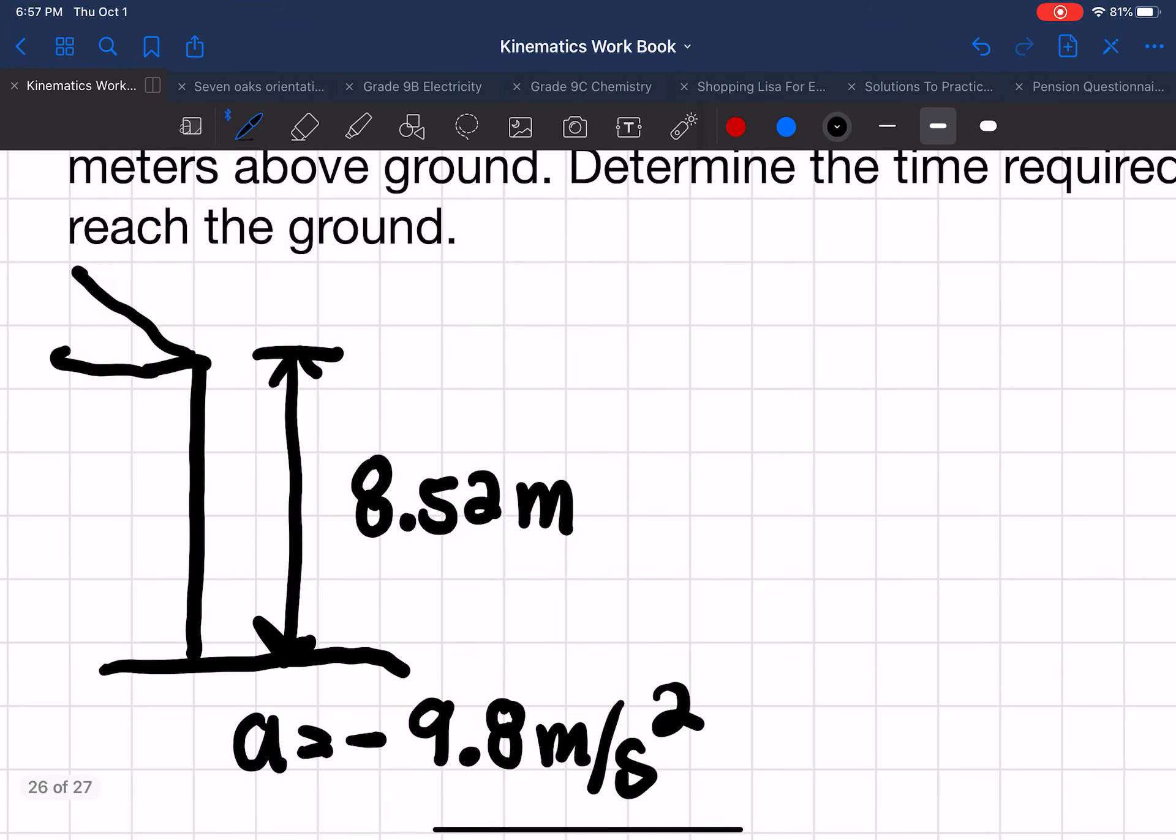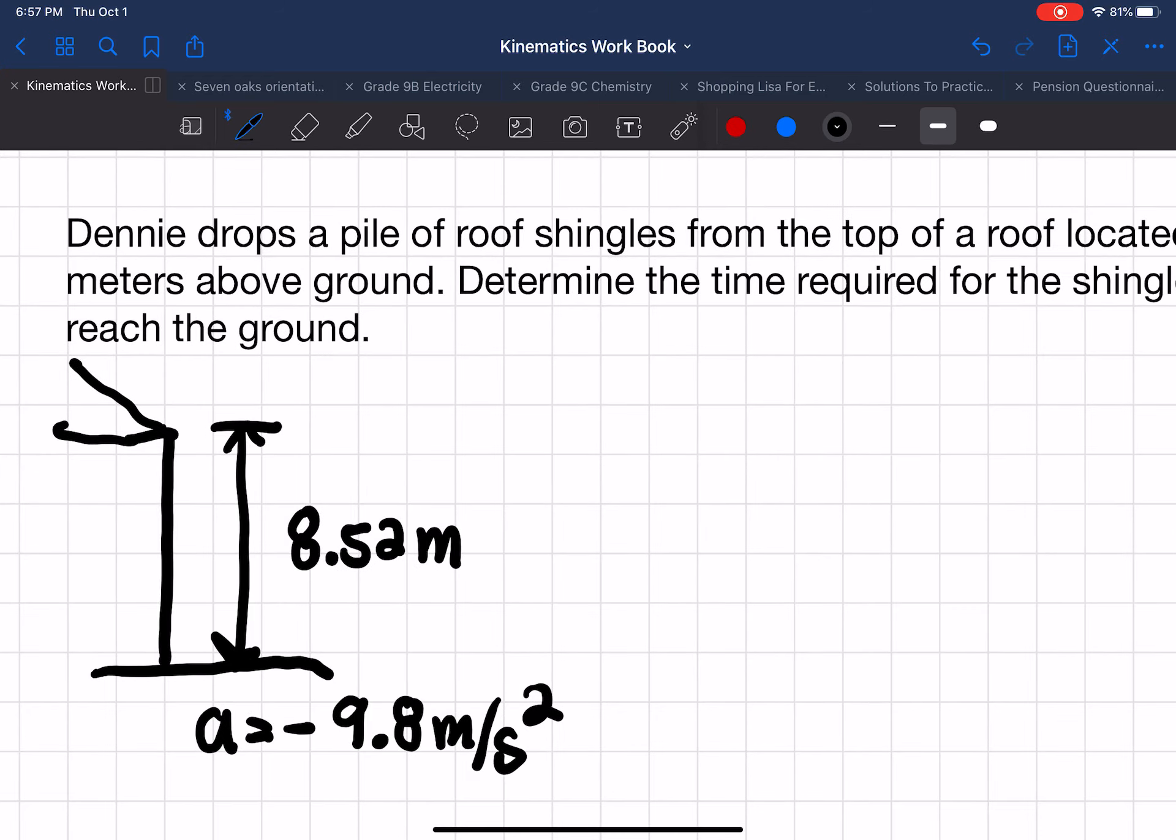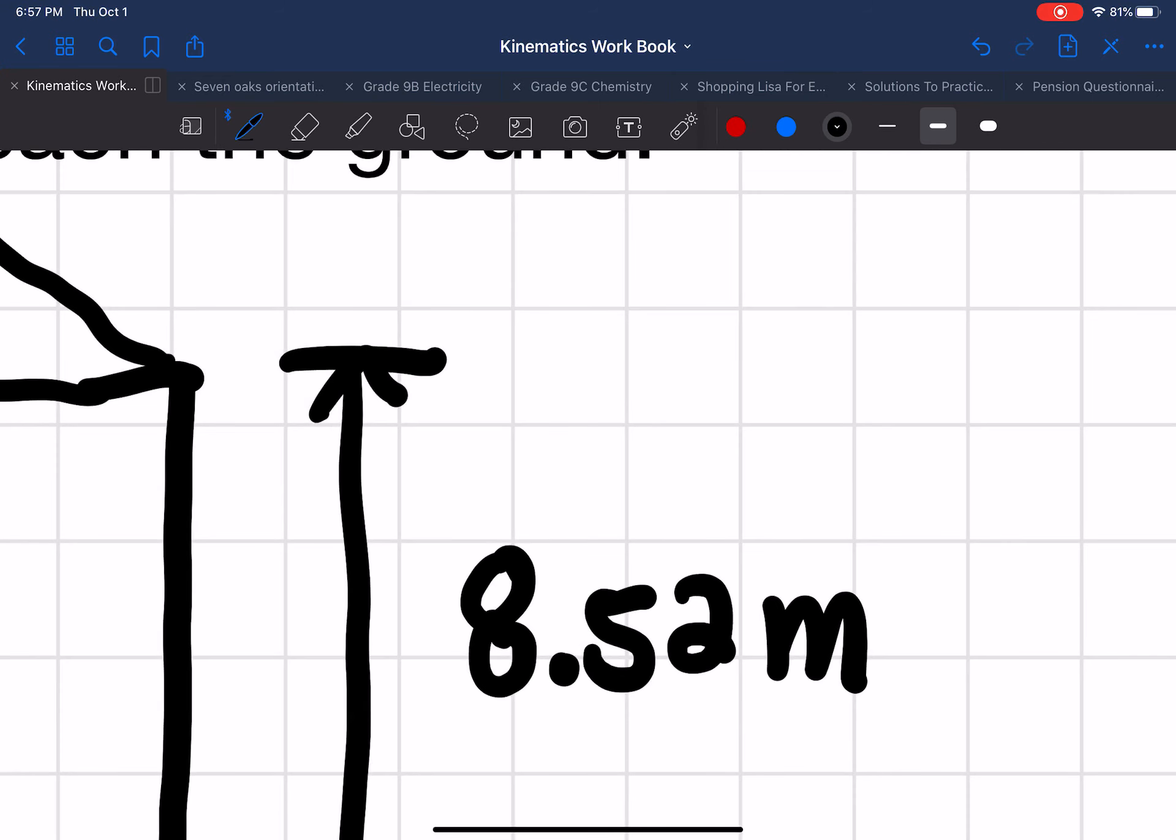The acceleration in this question, so it's freely falling, and we know from point 1 that it's negative 9.8 meters per second squared. And the velocity, because she just drops a pile of roof shingles from the top there, the initial velocity equals 0 meters per second.